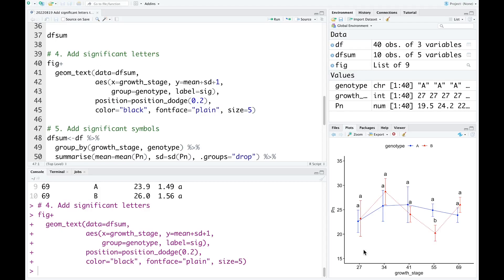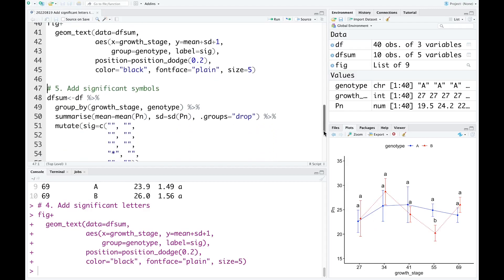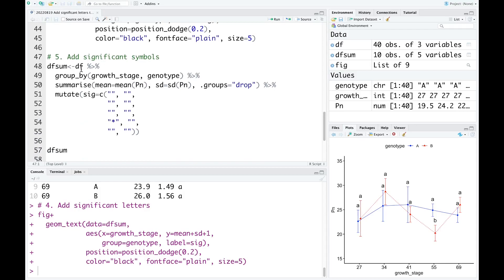If you want to use the significant symbols, for example stars, instead of using significant letters, you can do that. To add the significant symbols, for example stars, we do the same thing as previously. We just use stars here instead of using the letters. I run this code now.